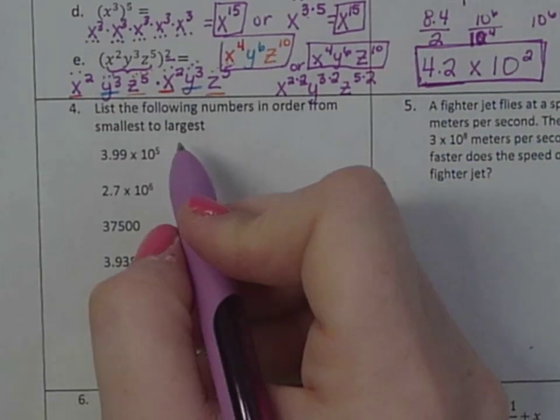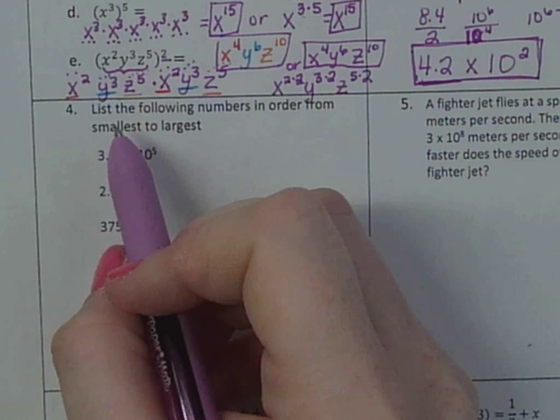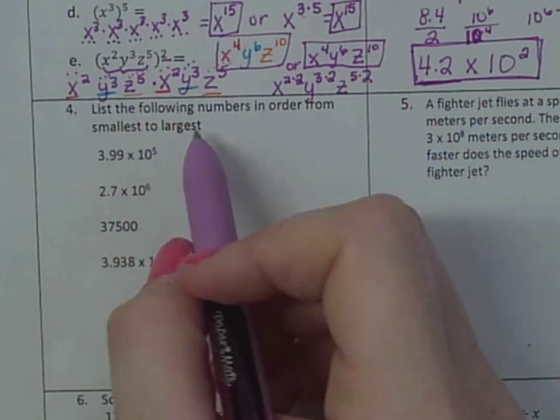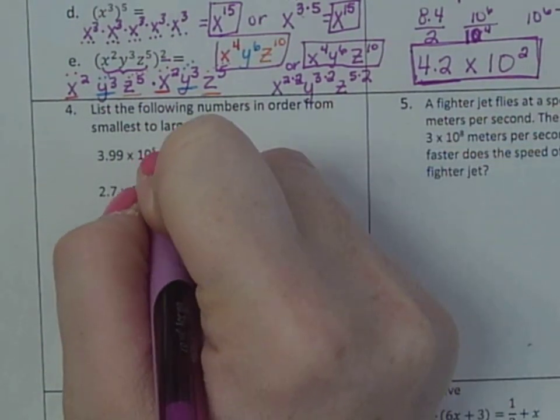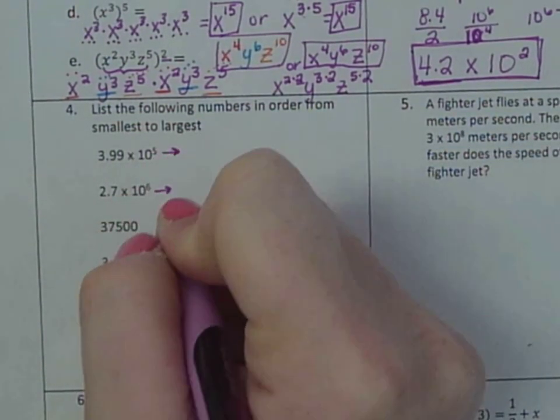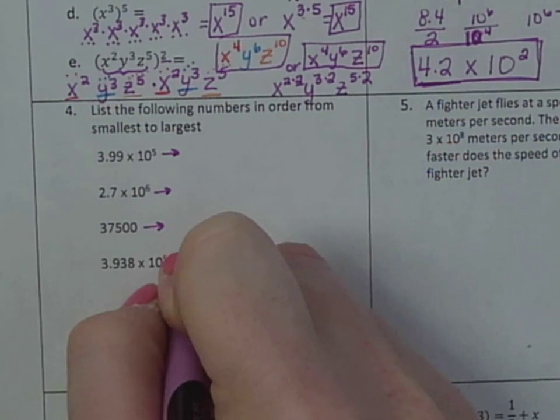Okay. Now, this next part says list the following numbers in order from smallest to largest. So I'm going to write them all in the same form, and I'm going to expand them out.